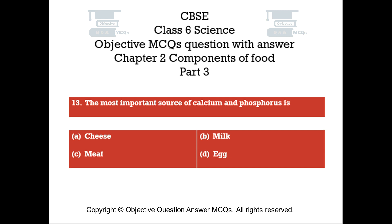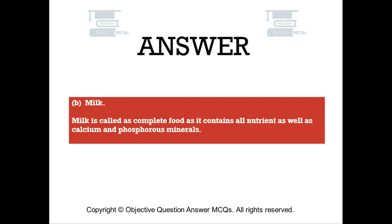Question number 13: The most important source of calcium and phosphorus is. Option A: Cheese. Option B: Milk. Option C: Meat. Option D: Egg. The right answer is Option B — Milk. Milk is called a complete food as it contains all nutrients as well as calcium and phosphorus minerals.